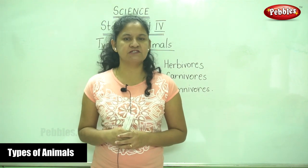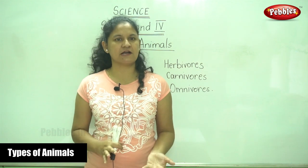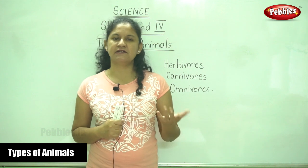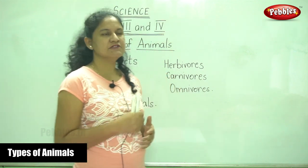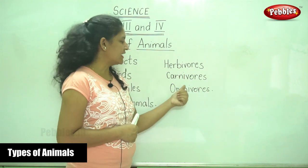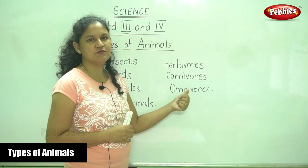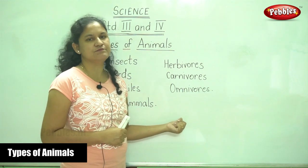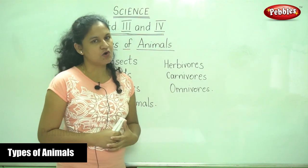In the absence of plants, omnivores eat flesh, and vice versa — in the absence of flesh, they eat plants and satisfy themselves. To summarize: animals that eat plants are herbivores, animals that eat the flesh of other animals are carnivores, and animals that eat both plants and other animals are omnivores.